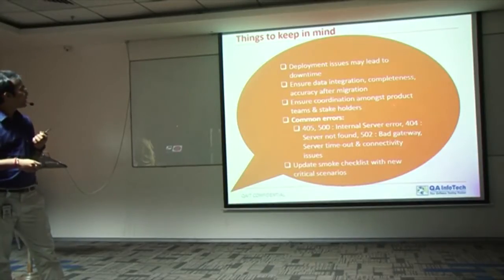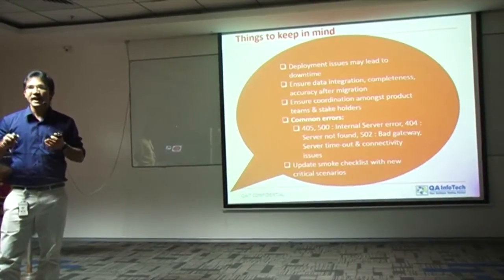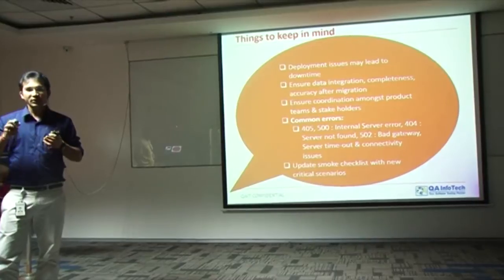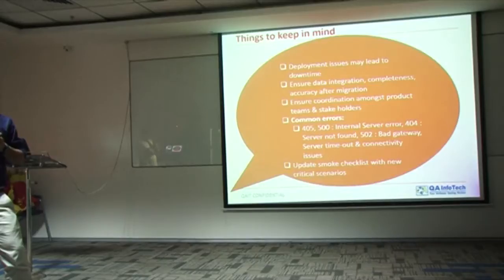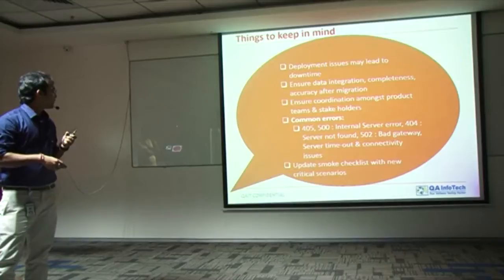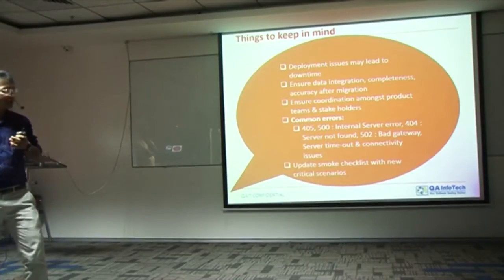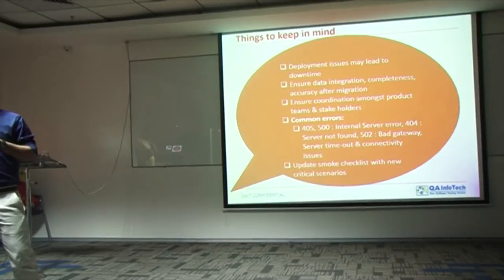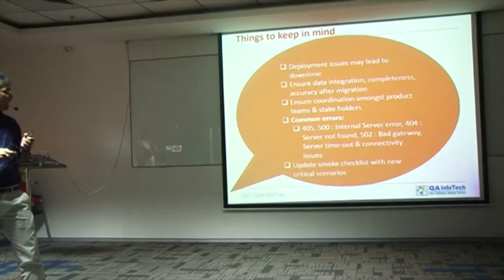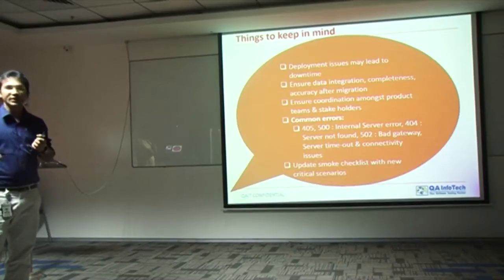We need to ensure that coordination among the product team members and stakeholders is tightly managed so there is no discrepancy creeping into the estimation of deliverables and end results. Also, we need to update the smoke checklist after each deployment cycle — it cannot be a static one, because performance test scenarios may introduce new issues that need to be included, so it must be a dynamic checklist.